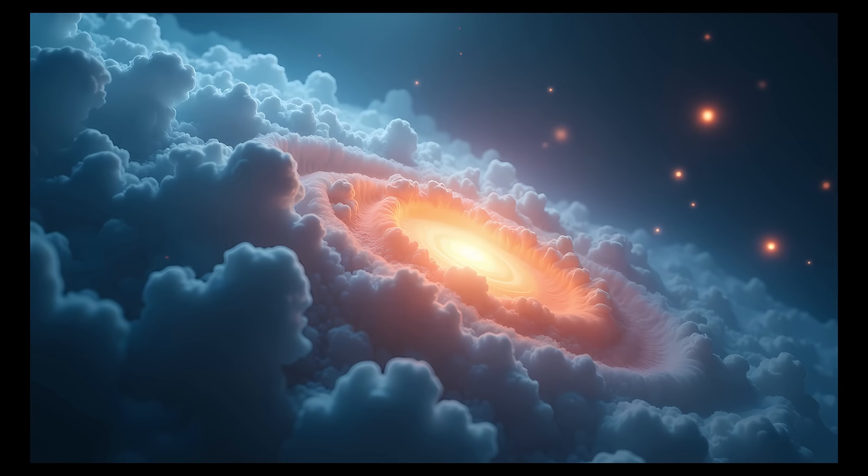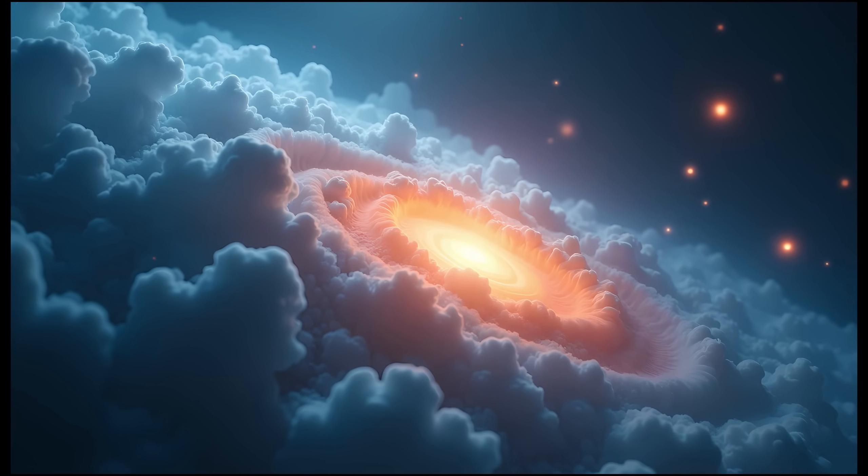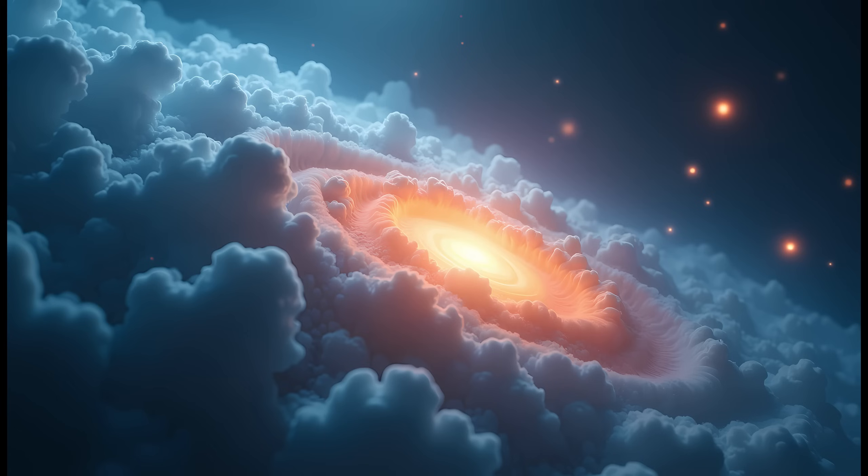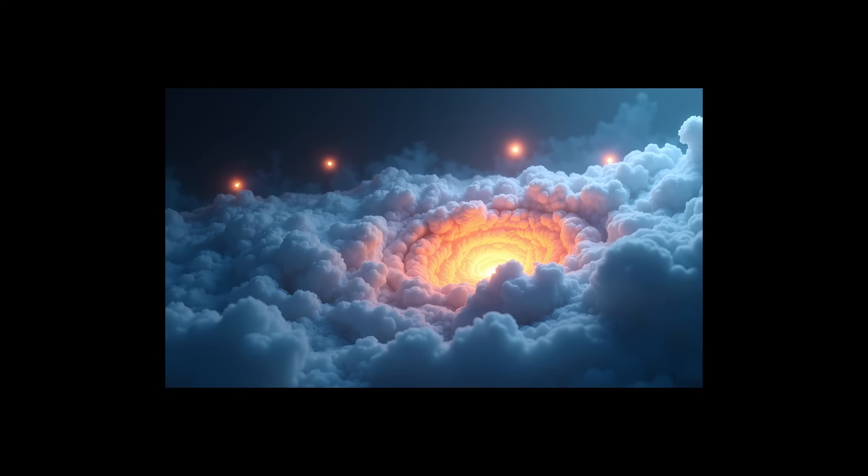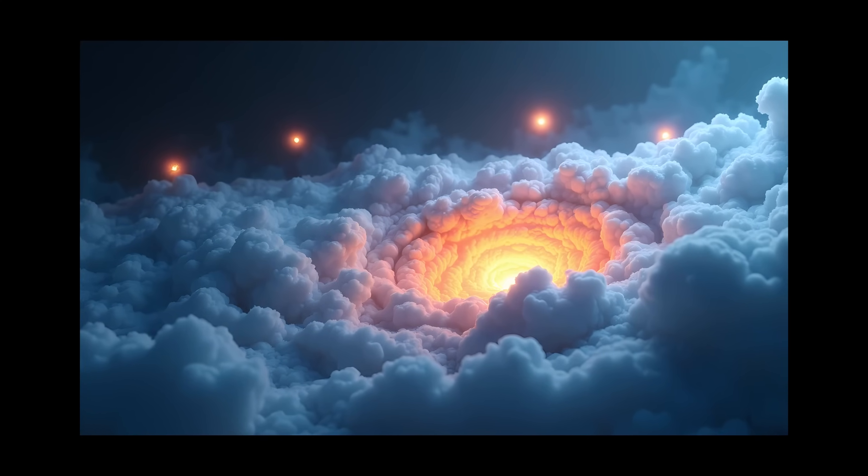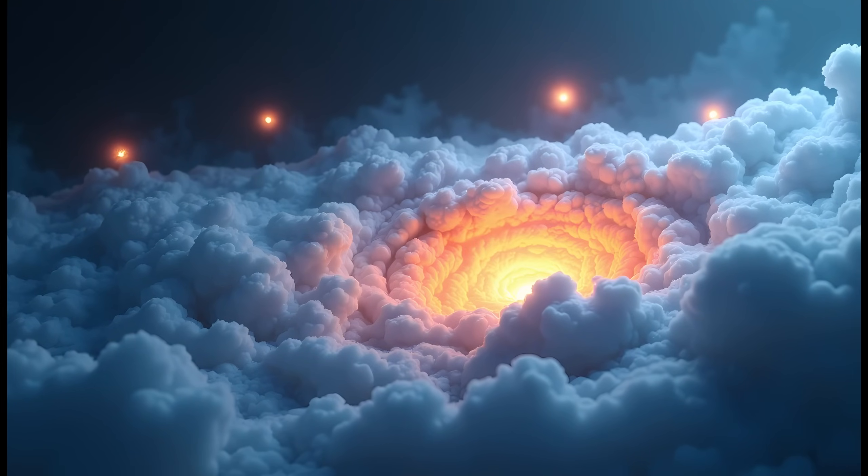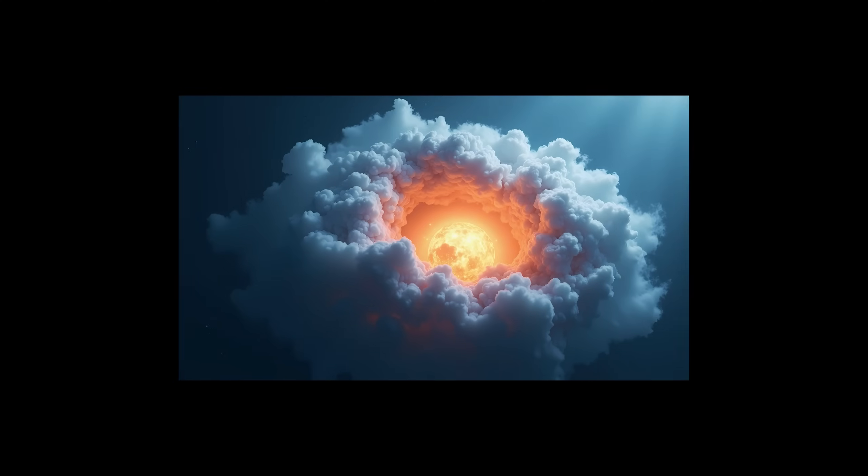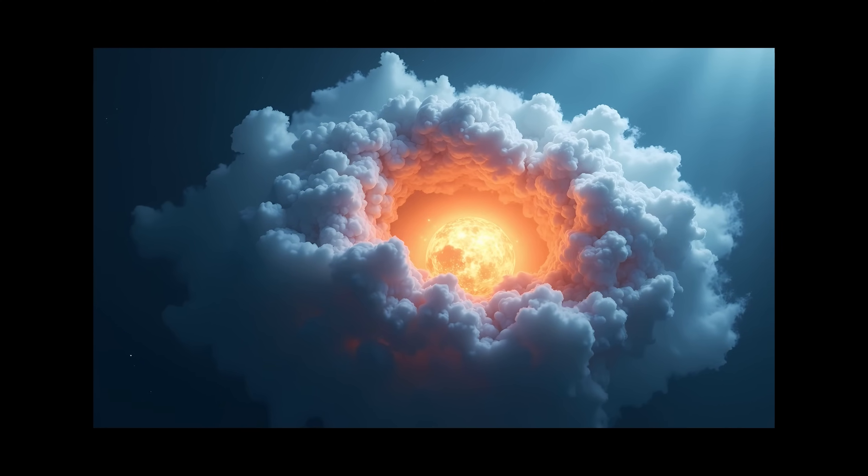Water is fairly common in our solar system, it's found on icy moons like Europa, Enceladus, and Ganymede, in the form of ice and even subsurface oceans. There's also water vapor in the atmospheres of some planets and comets. But nothing, and I mean nothing, comes even close to the scale of the cloud around this quasar. The water in our entire solar system, including Earth, is a rounding error compared to what's floating out there 12 billion light years away.